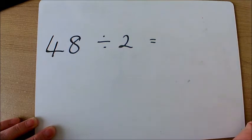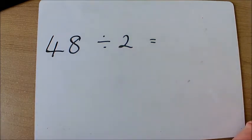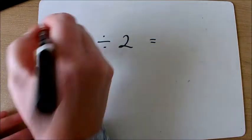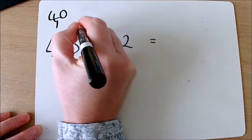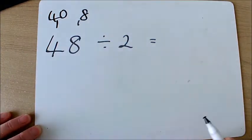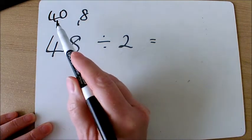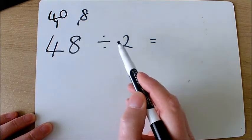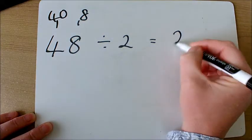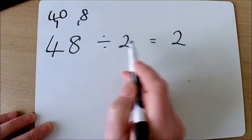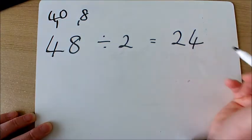If I partition my 48 into 40 and 8, I can then do these two calculations separately. 40 divided by 2 is 20, 8 divided by 2 is 4, so my answer would be 24.